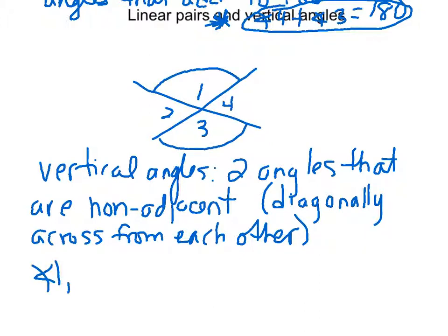That also means that angle two and angle four are also vertical angles. So we have two pairs of vertical angles whenever two lines criss-cross.